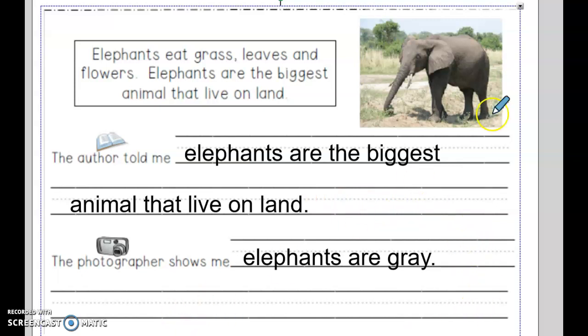Now I am going to look at the photograph. And there are so many things I could have written down here. I thought about writing down that an elephant has tusks, an elephant has a very long nose, an elephant has huge ears, an elephant has four legs. But I decided to write that the photograph shows me elephants are gray.